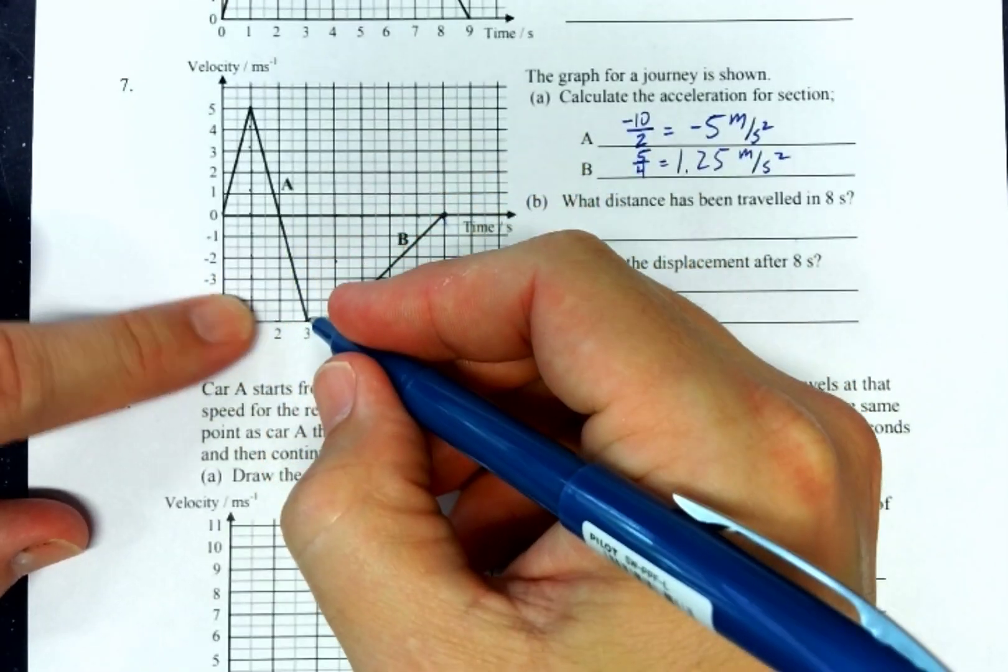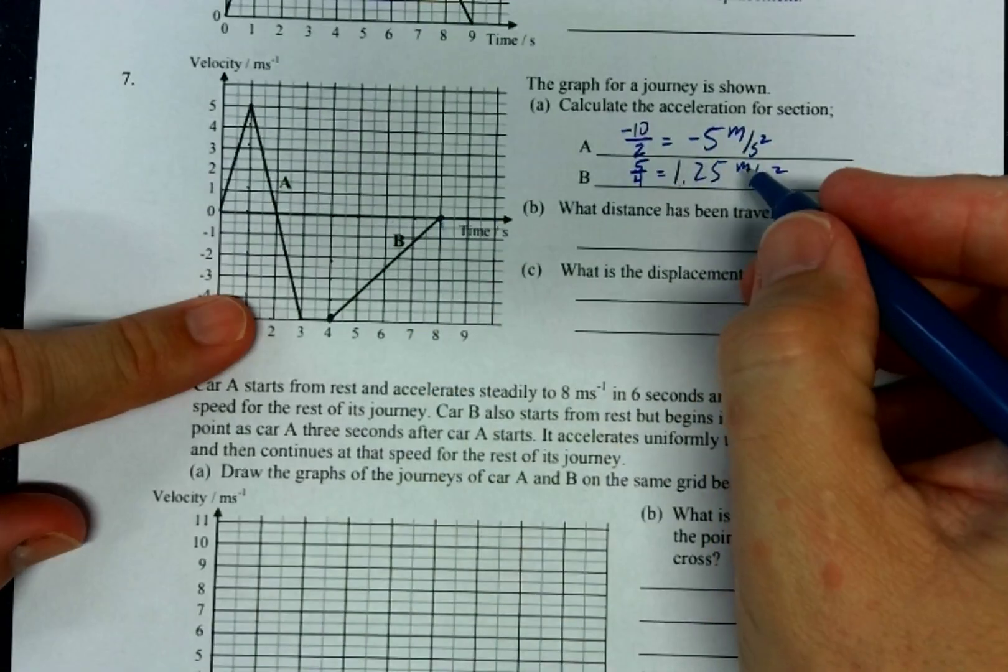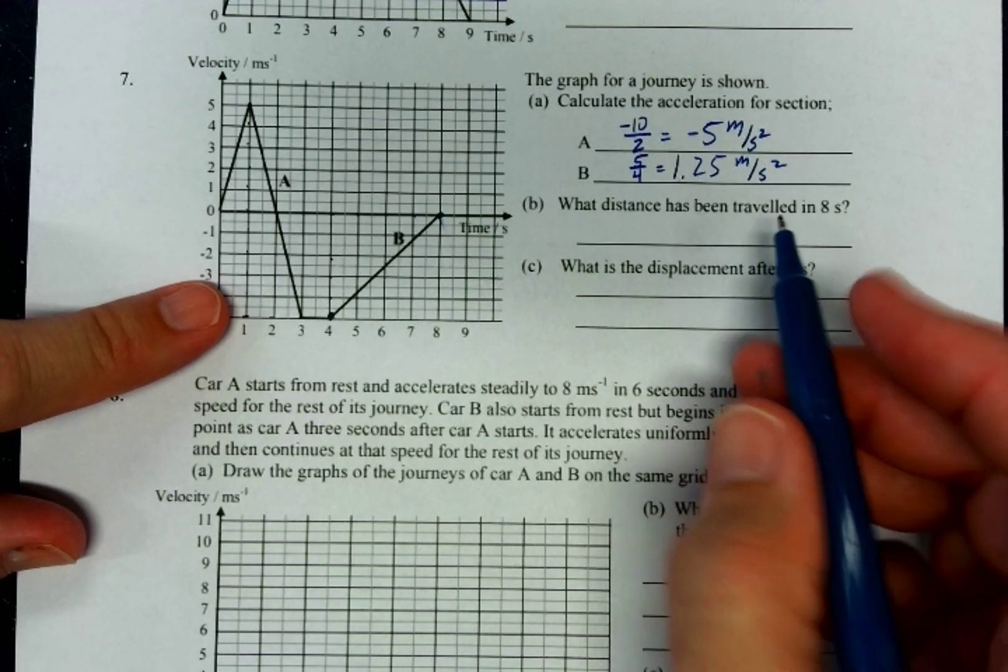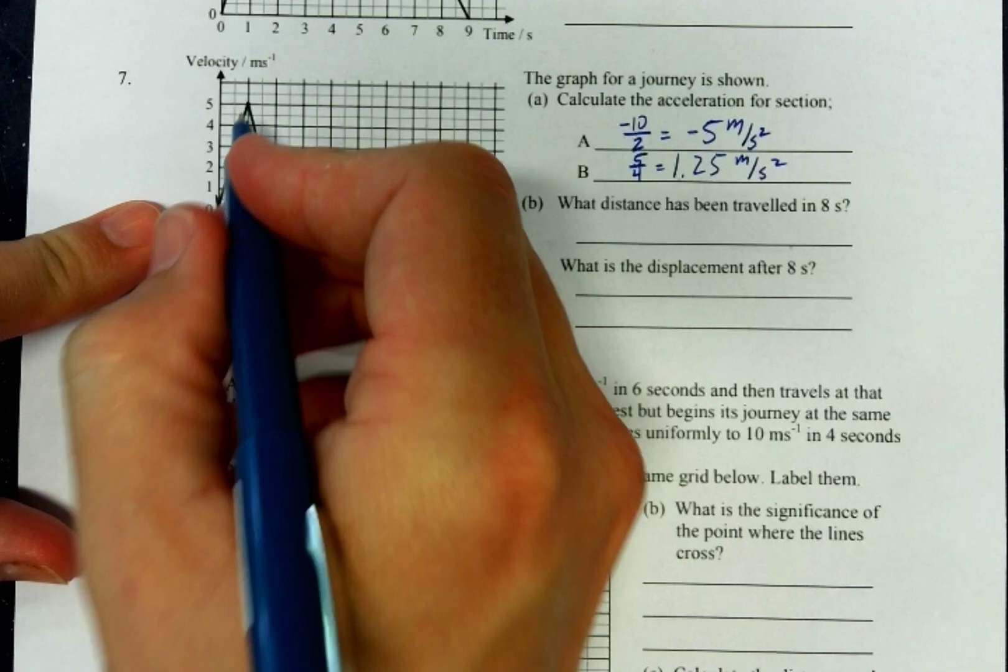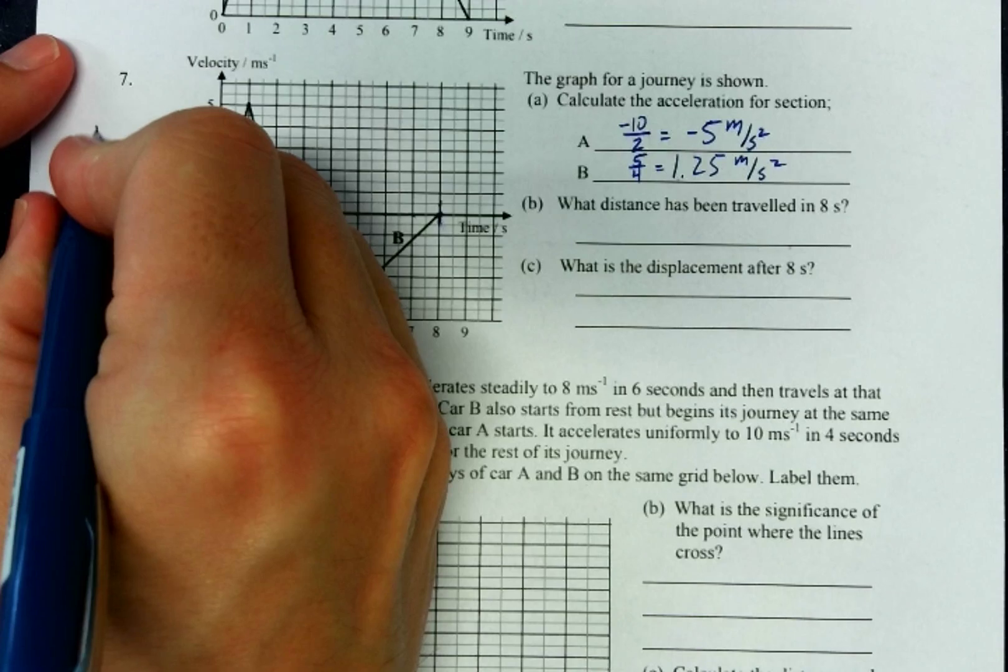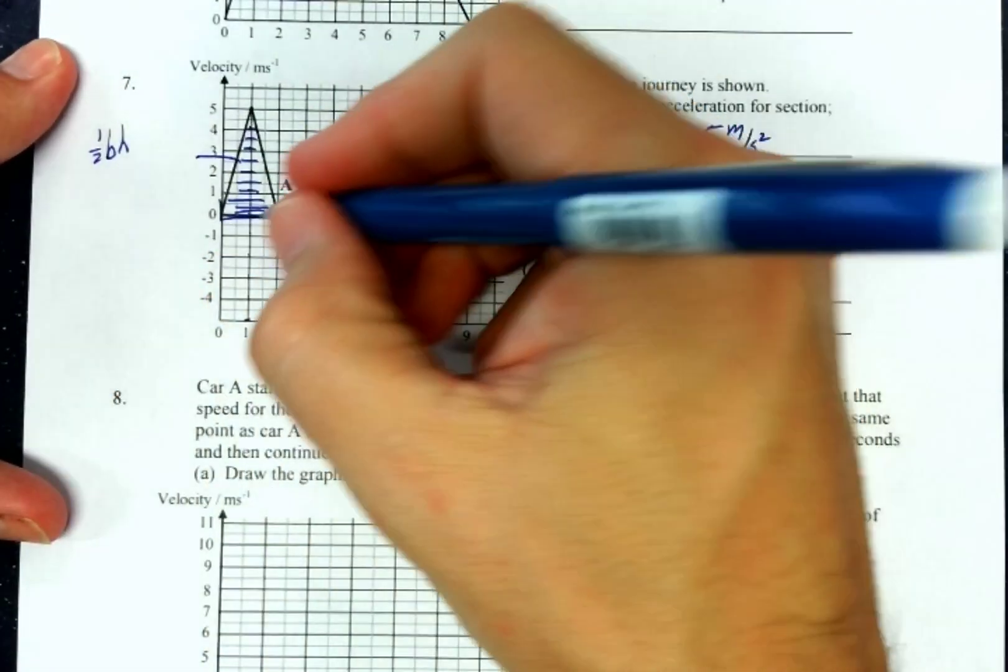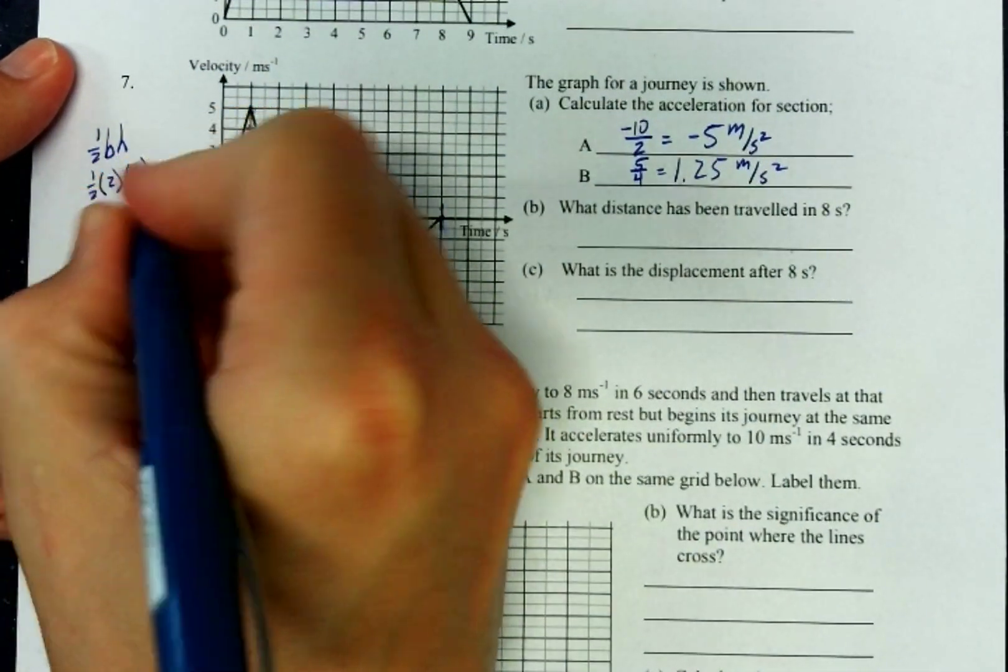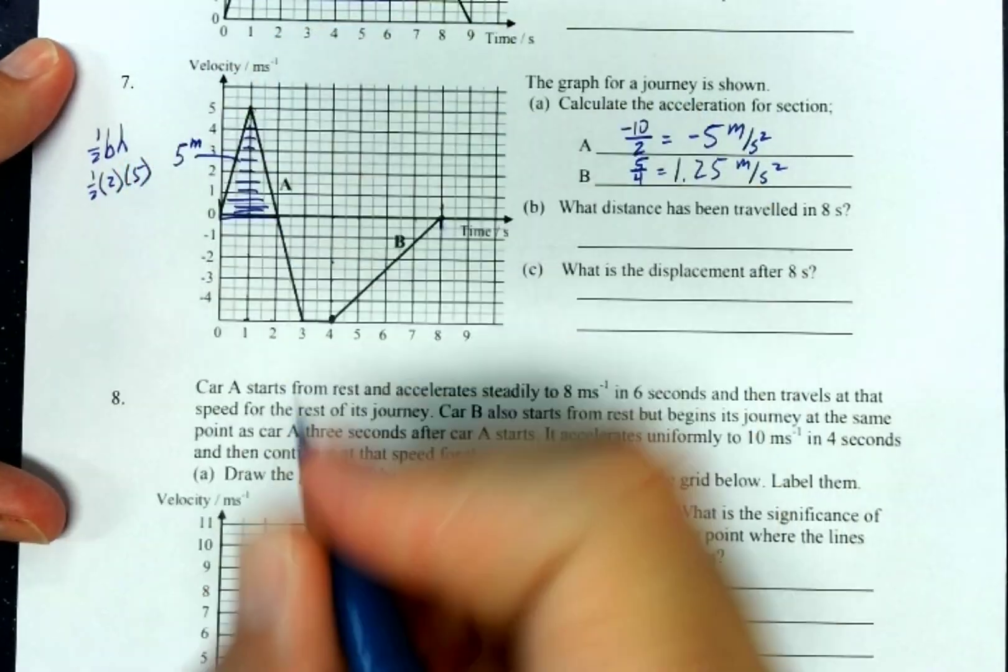Notice that this one had a negative slope, therefore it was a negative acceleration. This one had a positive slope, therefore it's a positive acceleration. Now it wants us to find the distance traveled in eight seconds. So that would be from here to there. So again, we're going to find the area of each of these shapes. So this is a triangle. So this triangle would be one-half base times height. The base is two and the height is five. So one-half times two times five, which that will give me five. So that area is five meters.